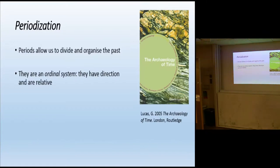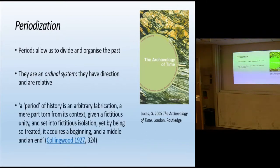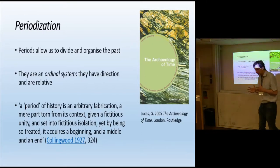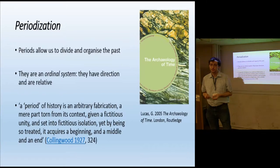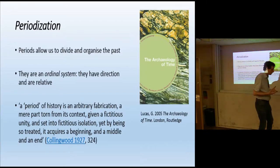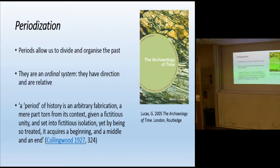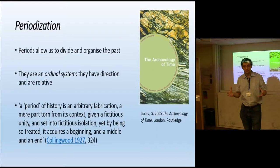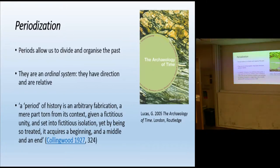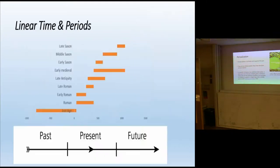Periods have direction and they are relative, and I think that's important. When we split up our time into periods, what we're producing are periods of different lengths that follow one after the other. At the same time, we've known for a very long while that our periods are constructions. They are, as Collingwood back in 1920 said, arbitrary fabrications — a part torn from its context. And yet we have to work with these periods and the parameters that they establish. Part of what this introductory talk is about is trying to think about what that means for the 5th century AD.